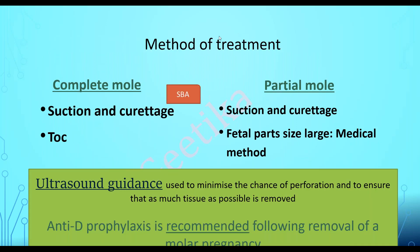The treatment of choice is suction and curettage. We do not go for medical line of management because any prostaglandins given can lead to strong myometrial contractions, causing trophoblastic embolization of tissue, which can be a life-threatening complication for the mother. That's why the treatment of choice is suction and curettage.